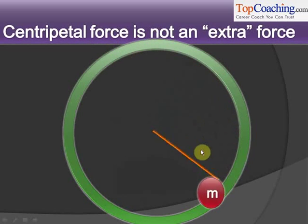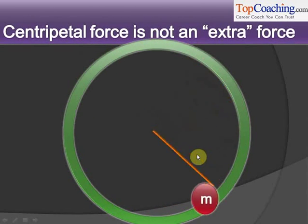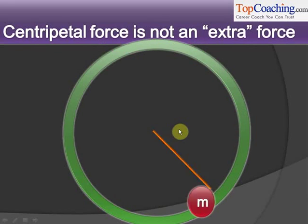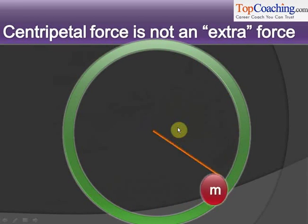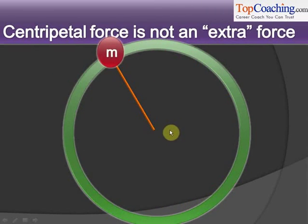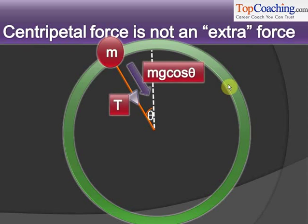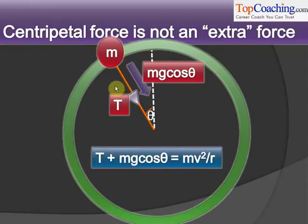For example, take a look at this particle which is tied to a thread and is rotating in a circle. I have taken a thread, attached it to a particle, and the particle is rotating in a circle. No extra centripetal force is acting on this body. The tension in the thread is normal to the direction of motion of the particle at every instant. Tension is normal to the direction of motion of the particle, so tension provides the centripetal force.